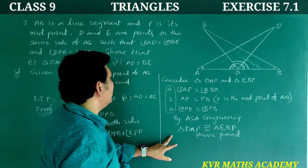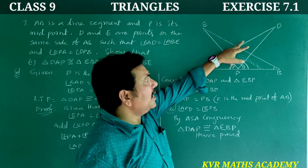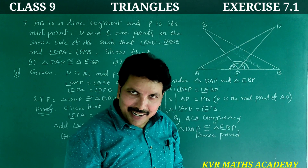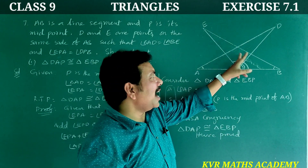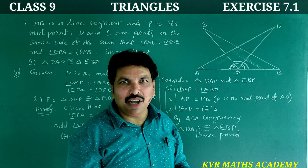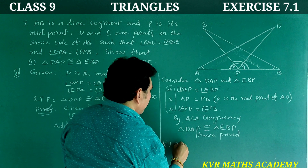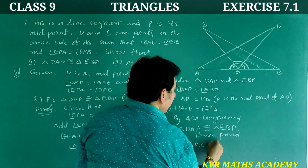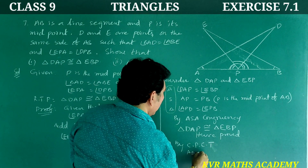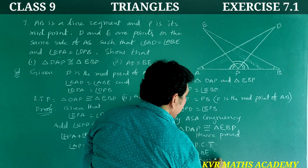For the second part, AD is equal to BE. Since the two triangles are congruent, the corresponding parts are equal. By CPCT (corresponding parts of congruent triangles), AD is equal to BE. Hence proved.